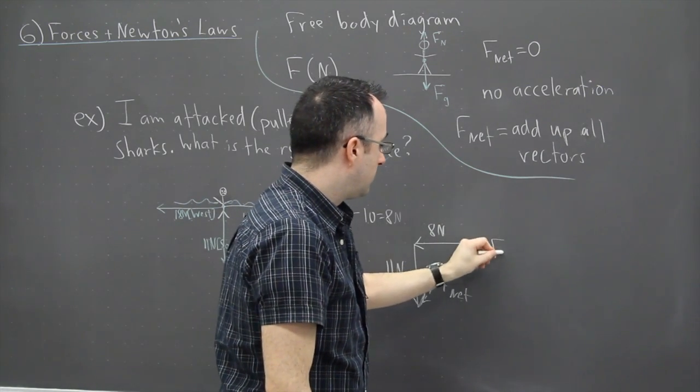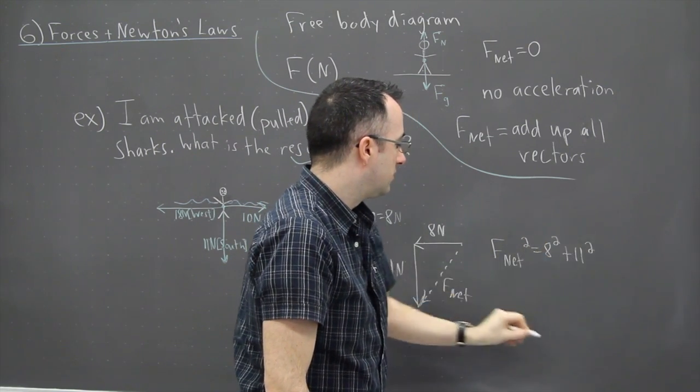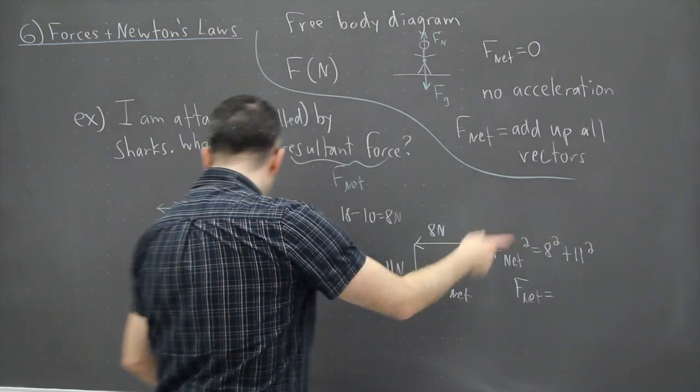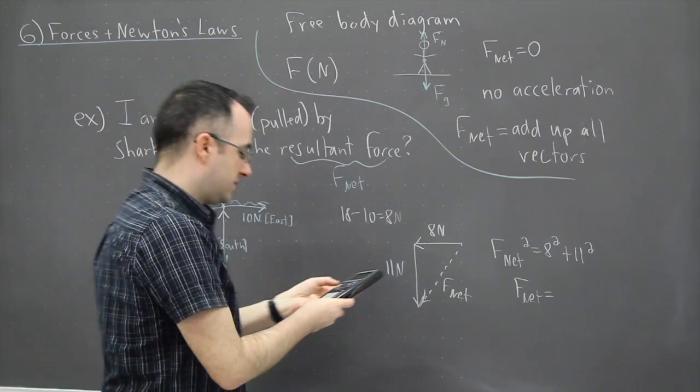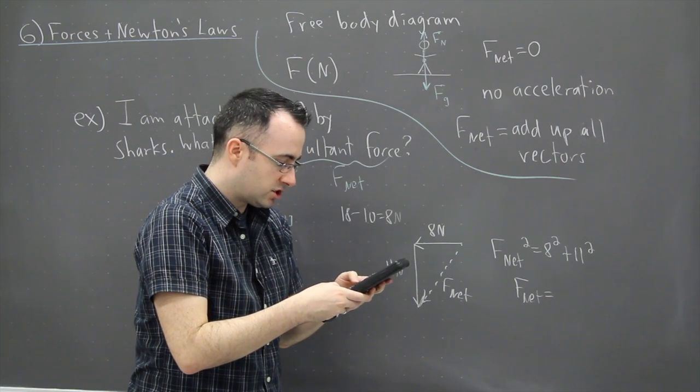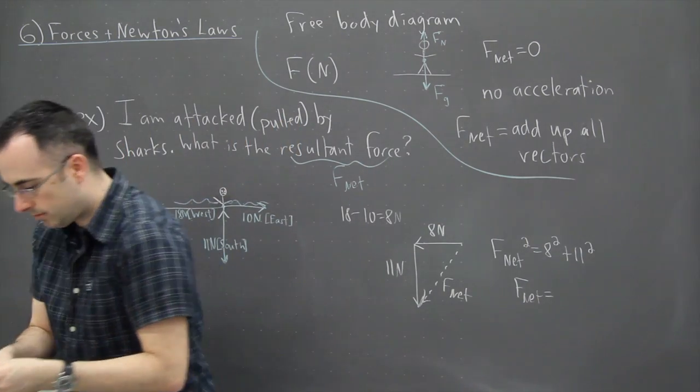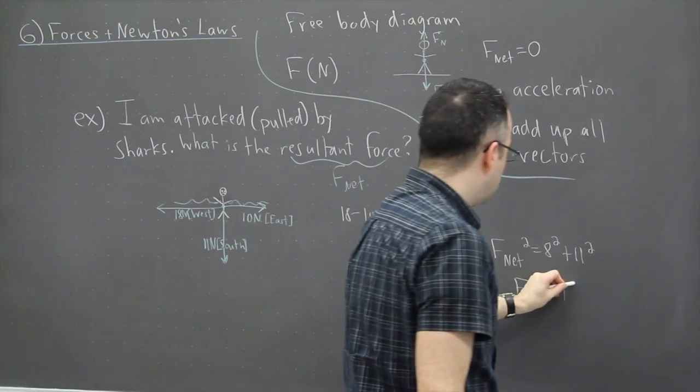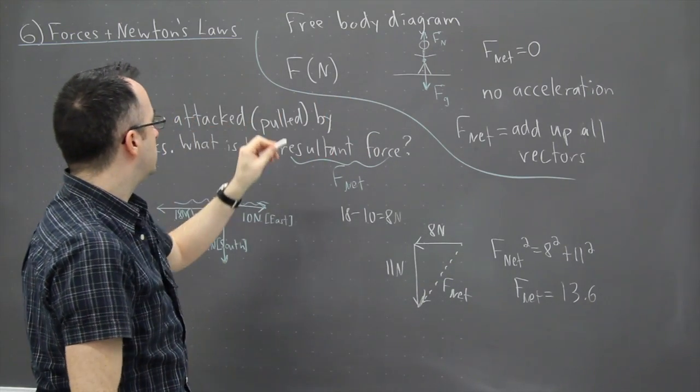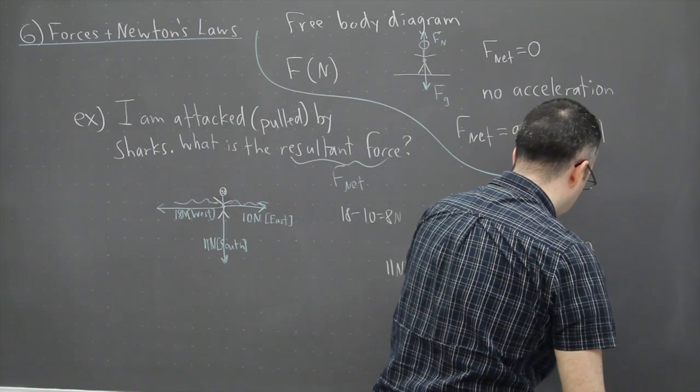We know that F net squared equals 8 squared plus 11 squared. Therefore, I can say then that F net is going to be the square root of 64 plus 121. So I'll just figure that out right now, because I need to do the square root of those. And the result is 13.6 approximately. Although I only did give two digits in my answer, in my question, so I can probably only say 14 newtons.